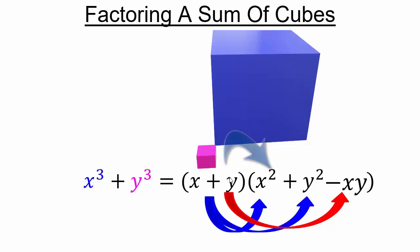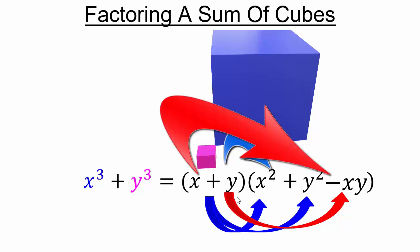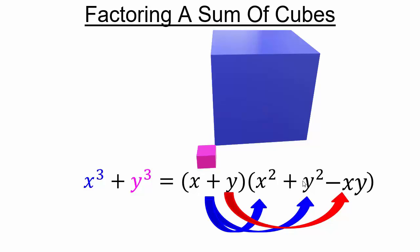Continuing the multiplication: y times x squared is positive yx squared; x times negative xy is negative x squared y; plus y times y squared is plus y cubed. Then y times negative xy will add to positive xy squared, and you end up with just x cubed plus y cubed. You can check that multiplication and see for yourself that it works.